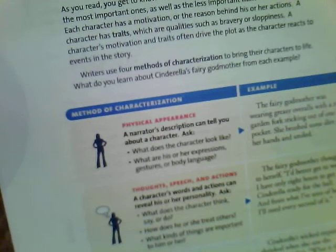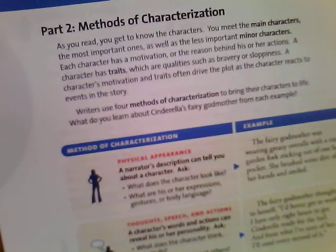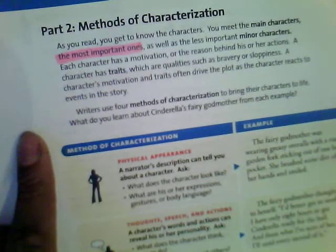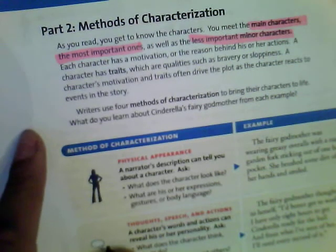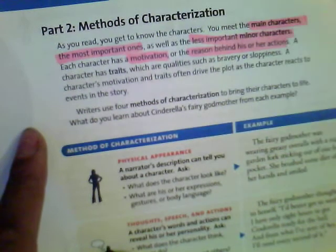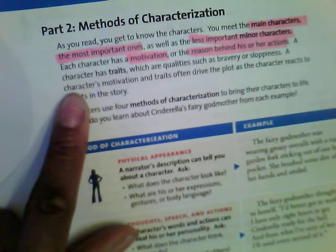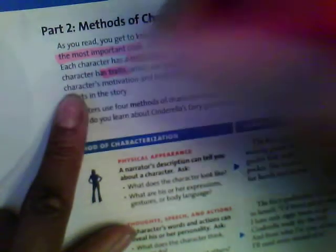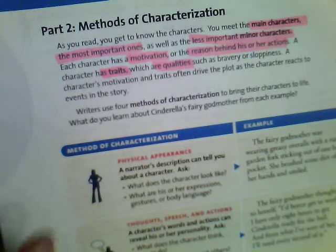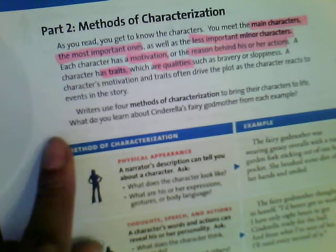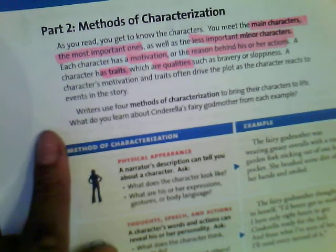In our online textbook we're in Unit 2: Character and Point of View, and this is the Text Analysis Workshop. As you read, you get to know the characters you meet. The main characters are the most important ones, and there are also the less important minor characters. Each character has a motivation — the reason behind his or her actions. A character also has traits, which are qualities such as bravery or sloppiness. A character's motivation and traits often drive the plot as the character reacts to events in the story.